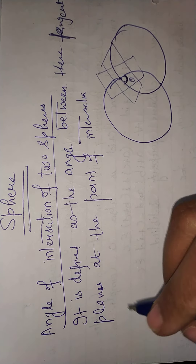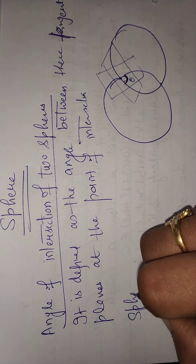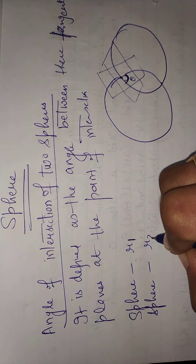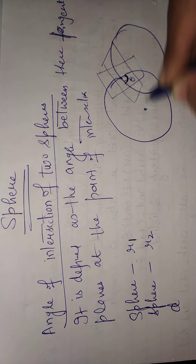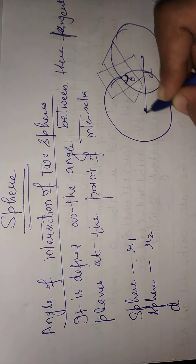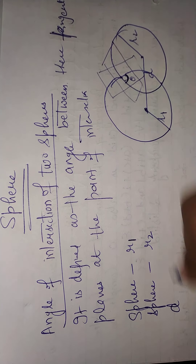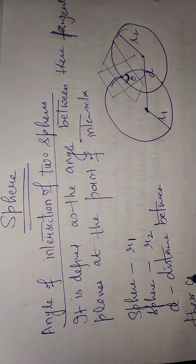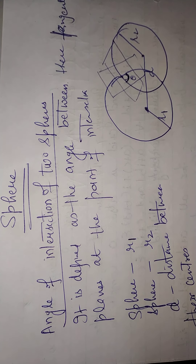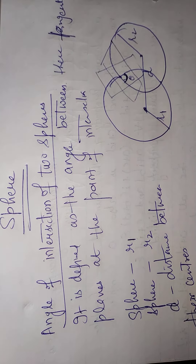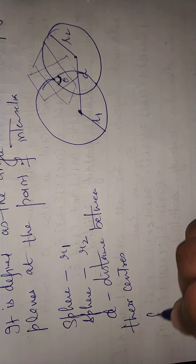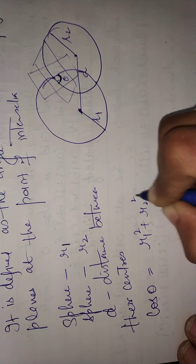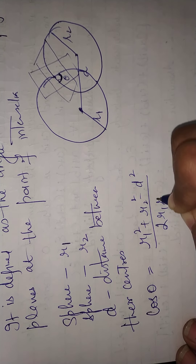How do we find the angle between two spheres? One sphere has radius r1, the other has radius r2, and d is the distance between their centers. The cosine of the angle theta is given by: cos θ = (r1² + r2² − d²) / (2 r1 r2).